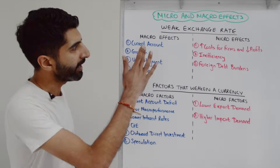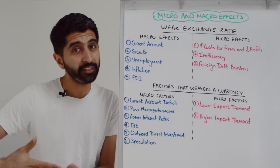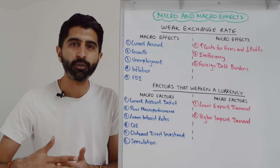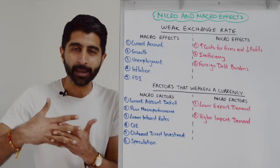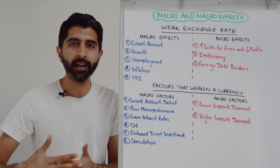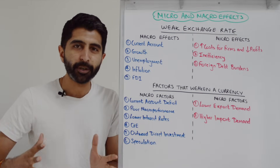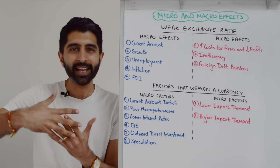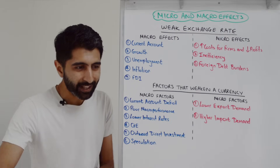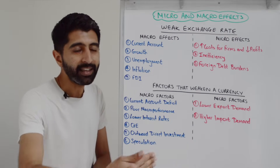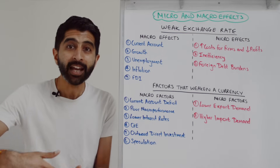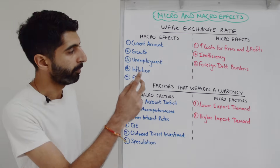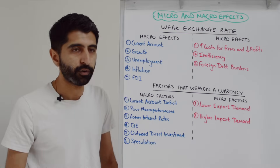On the macro side, we can go to current account improvement. A weak exchange rate makes imports dearer and exports cheaper, developing a chain of analysis to the current account balance improving. Taking that one step further, if that gets you to higher AD — higher X minus M, higher AD — that takes you to higher growth and lower unemployment. These are major macro effects.